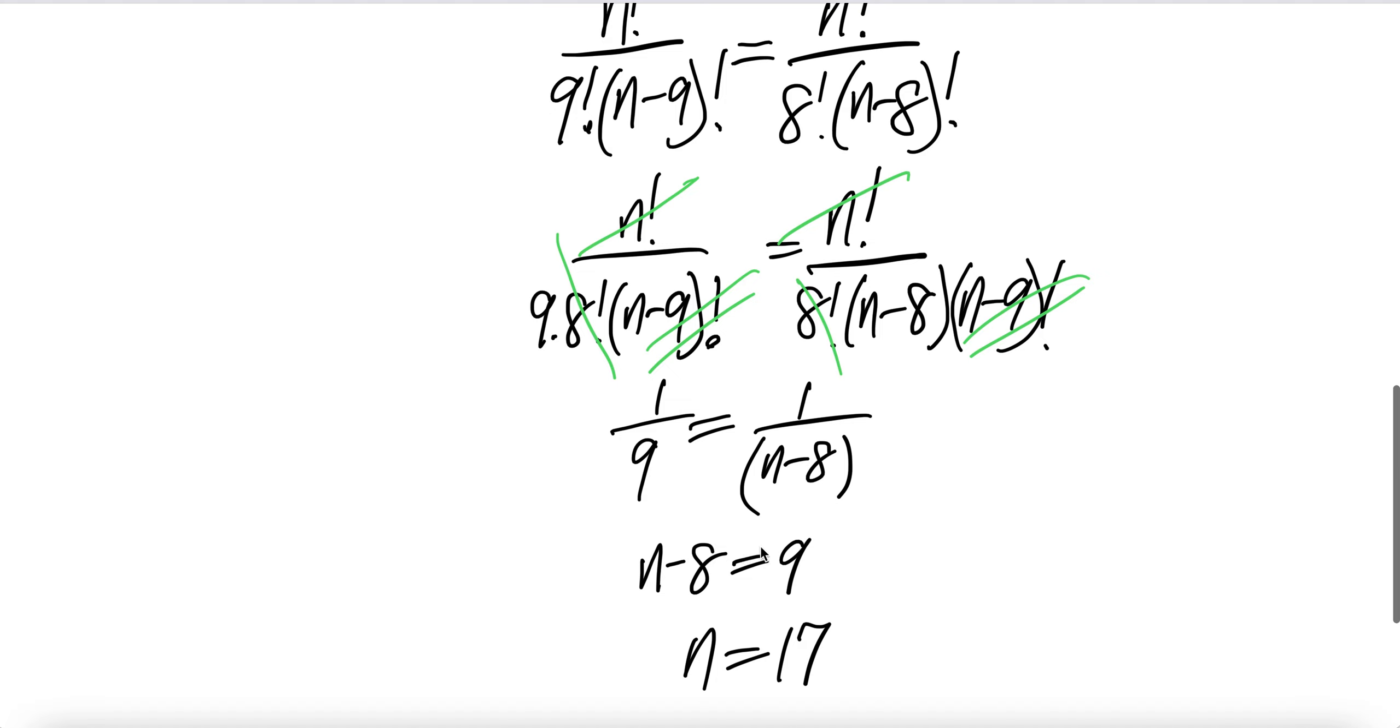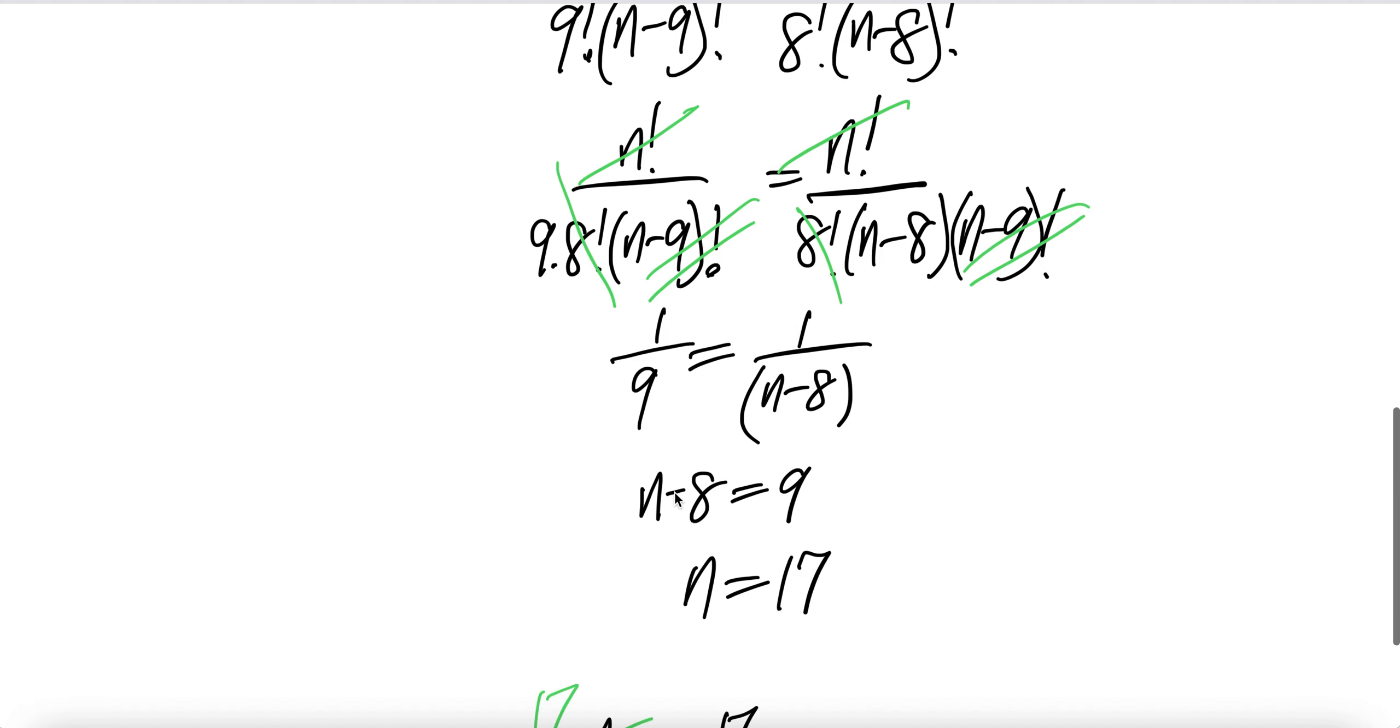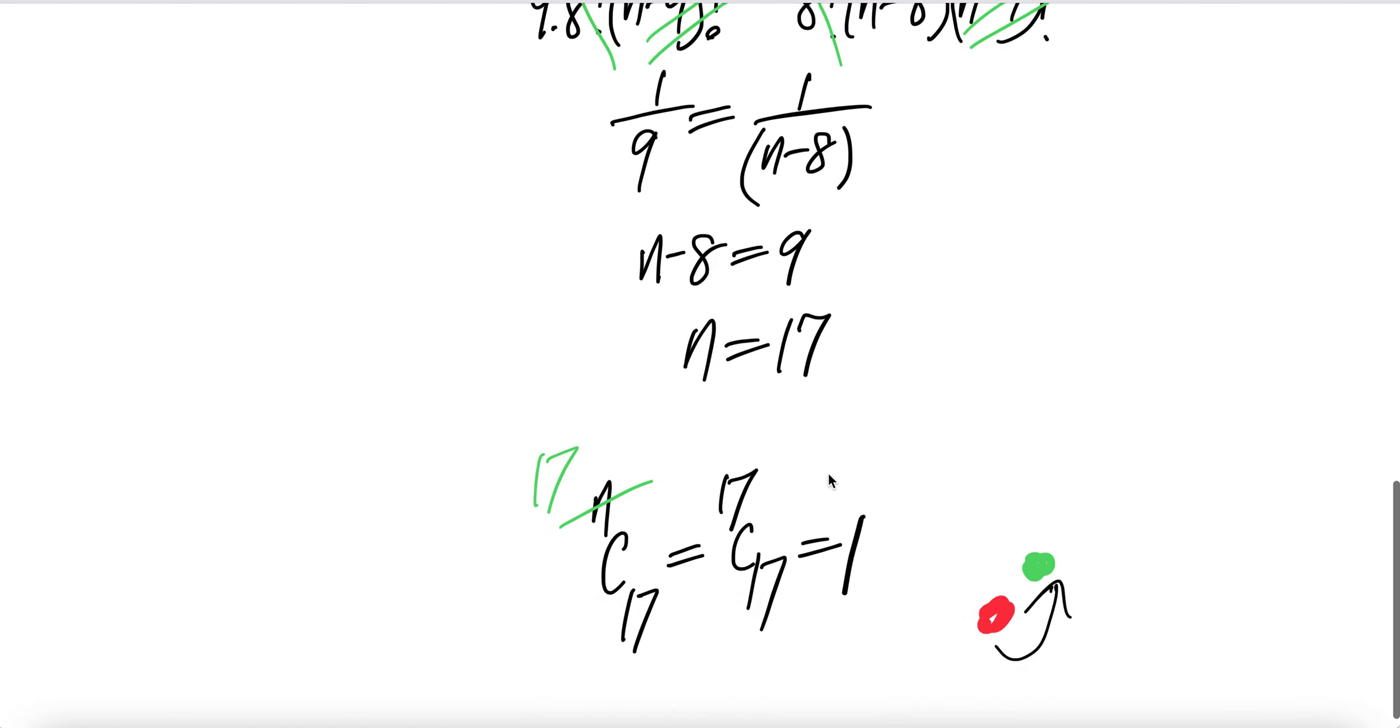Cross multiply, you get n minus 8 is equal to 9. n is equal to, bring this across, you get n plus 8 is 17. So now n is 17.